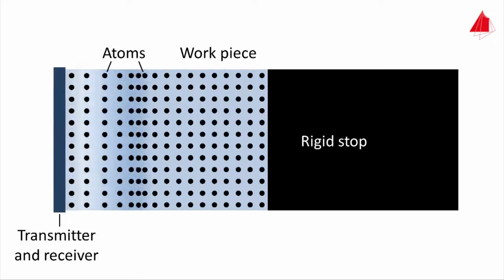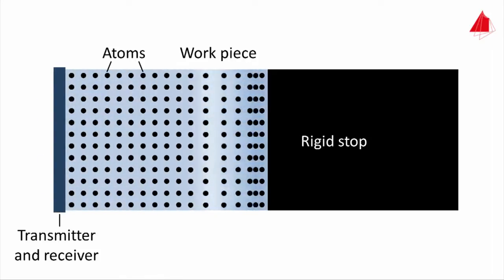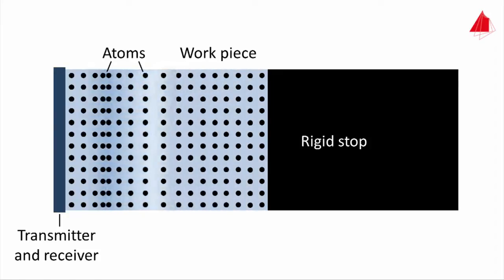Pushing and pulling briefly at the disc causes a longitudinal sound wave to propagate through the cylinder. When the sound wave reaches the rigid stop at the right side, it is reflected and runs back towards the disc, which now serves as a receiver.